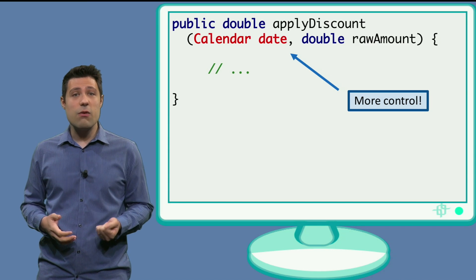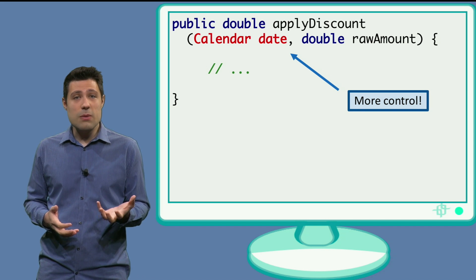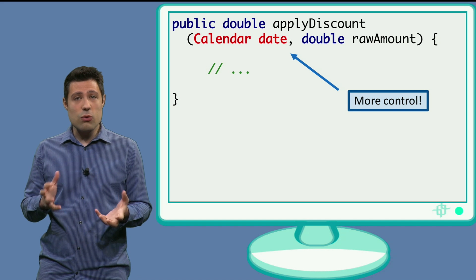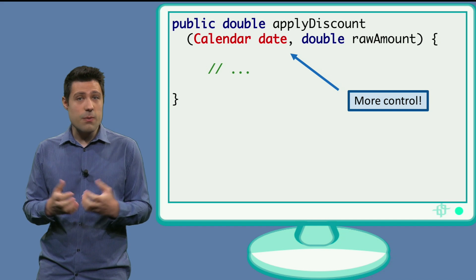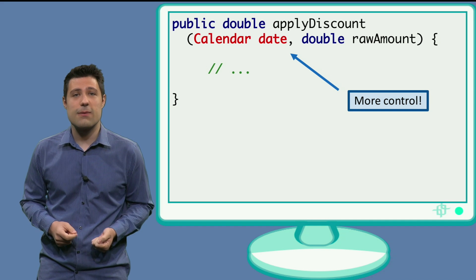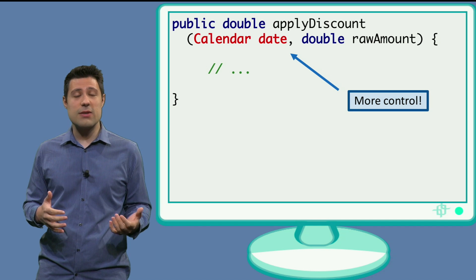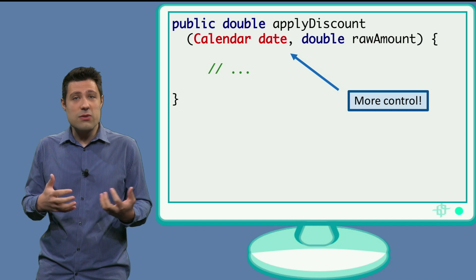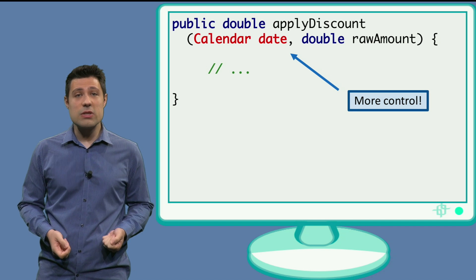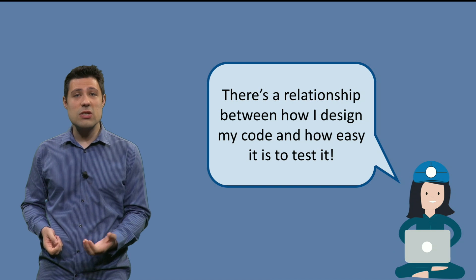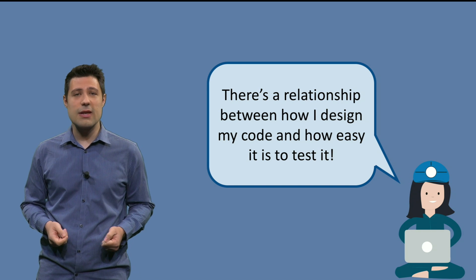This is, of course, very contextual and depends on the problem we are tackling. But one simple suggestion is: if you need to control the date, instead of actually getting the date by yourself, we can receive the date as a parameter of the applyDiscount method. This gives us more control because now the test method can pass any date we want, and we can simulate all the different cases. This is just one very simple approach, but there are many other design decisions you can take to facilitate your testing, and this is what we are going to explore in the next videos.